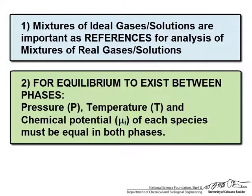The second thing to touch on is that we have known that for two phases of a species to be in equilibrium — a liquid and a vapor for instance — the pressure and temperature in both phases must be equal. Hopefully by now you have also heard of chemical potential and know that it must also be equal in both phases for each species to be in equilibrium.